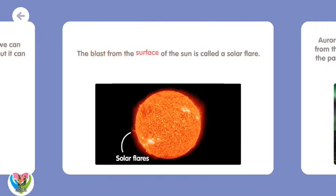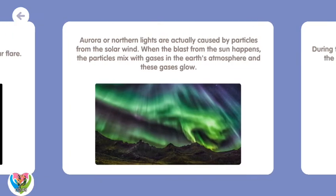The blast from the surface of the Sun is called a solar flare. Aurora or northern lights are actually caused by particles from the solar wind. When the blast from the Sun happens, the particles mix with gases in the Earth's atmosphere and these gases glow.